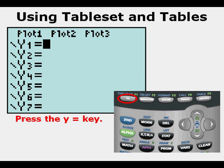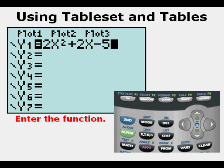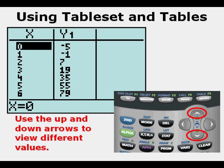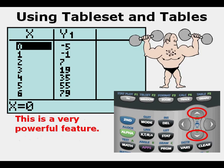We access the function editor by pressing the Y equals key at the upper left of the keypad. We enter the function Y equals 2X squared plus 2X minus 5. Press Second, then press Graph to get the table view. From here we can use the up and down arrows to examine different input-output relationships in the table of values. This is a very powerful feature allowing us to go wherever we want to see input-output relationships.